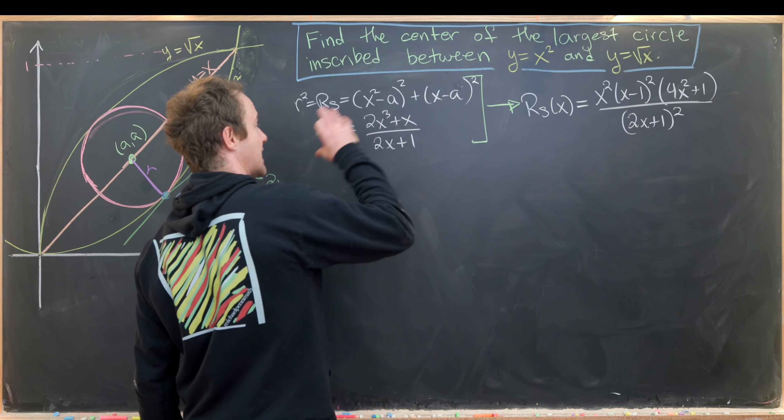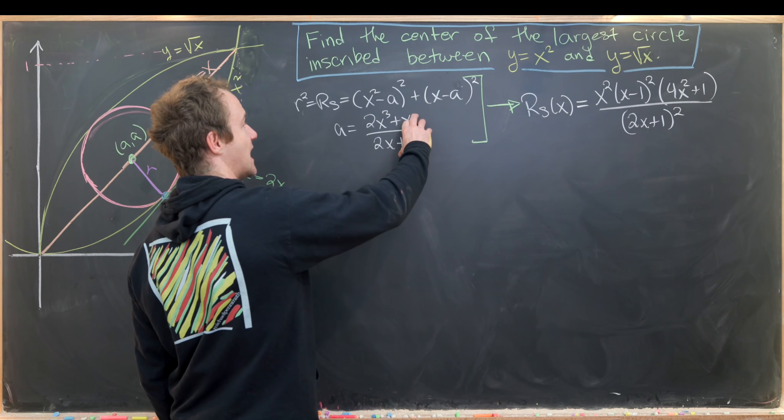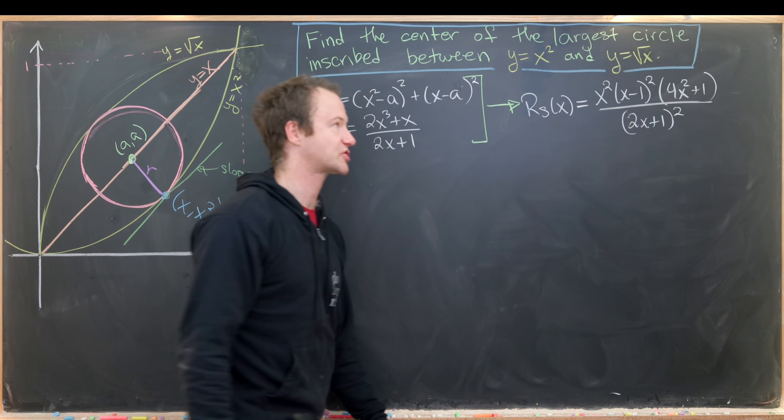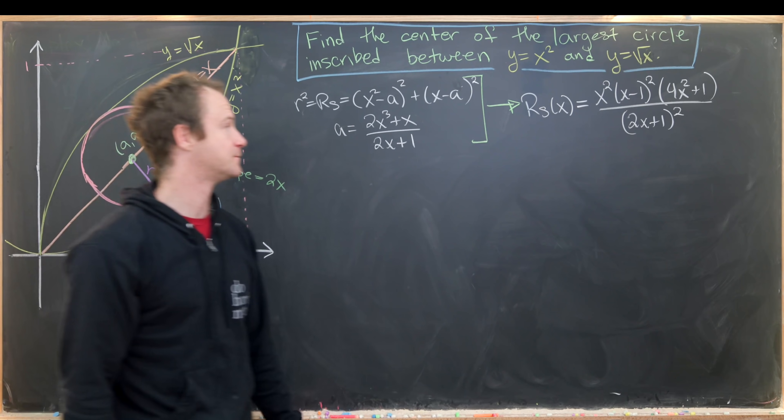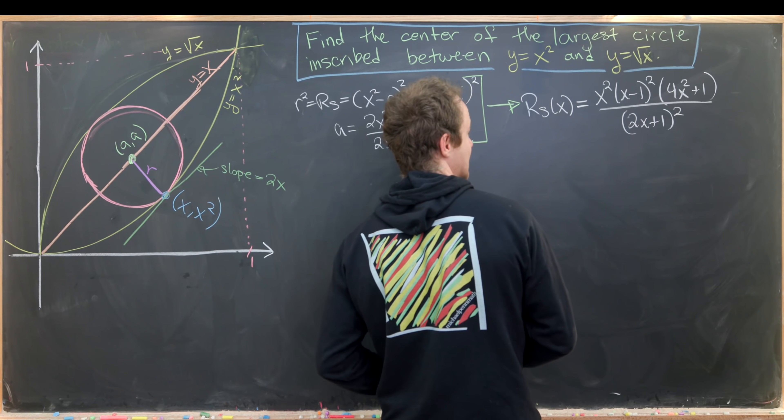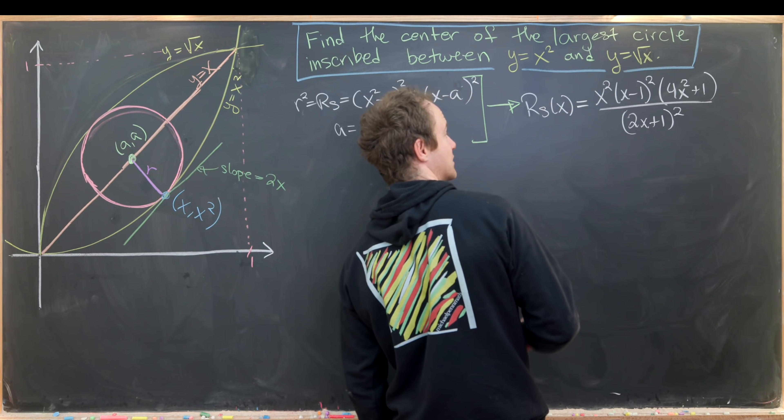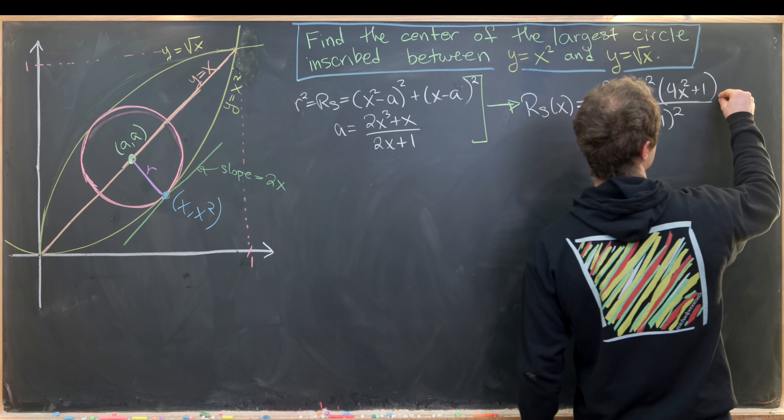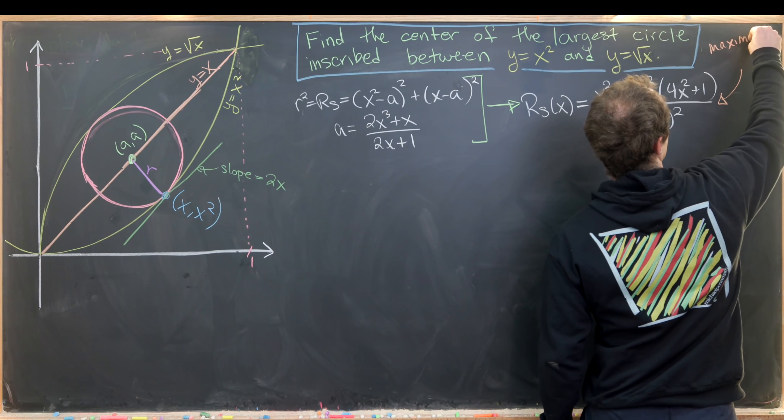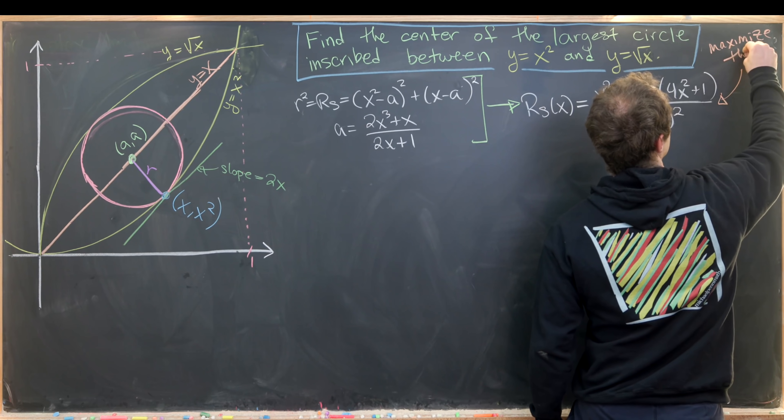When we substitute this value of a into our rs function, we get the following rational function: x squared times x minus 1 squared times 4x squared plus 1 all over 2x plus 1 squared. Now our goal is to maximize this.